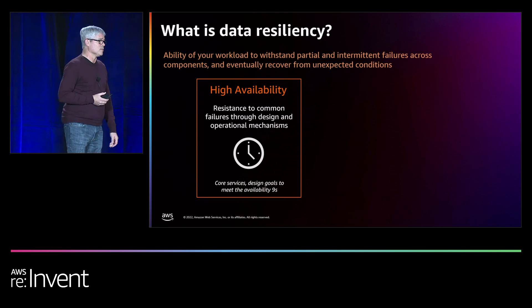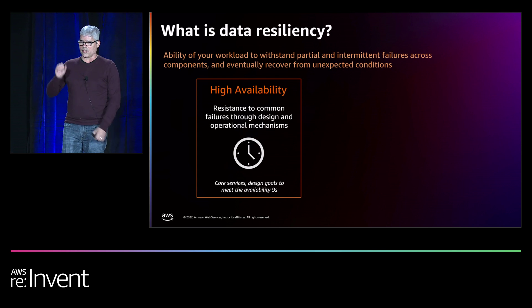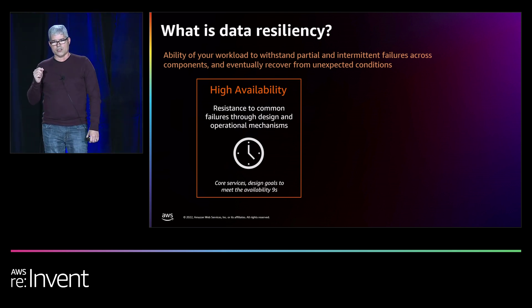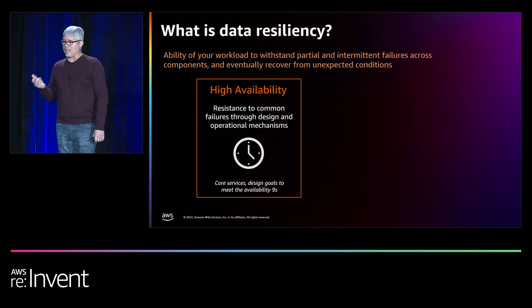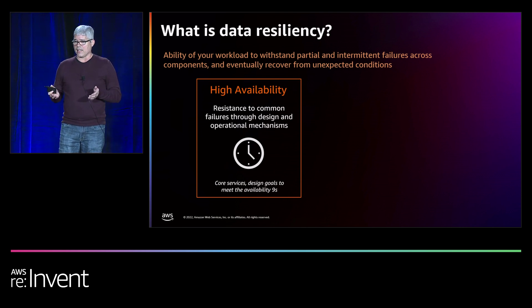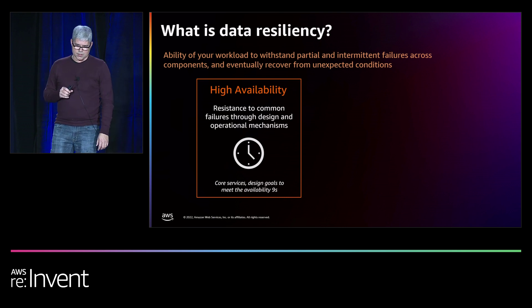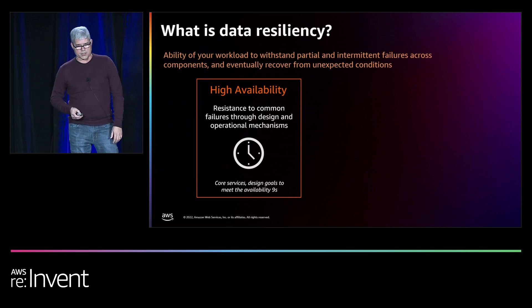Sometimes high availability is about graceful degradation rather than hard failures. Take video conferencing as an example: if your internet is having a bad day and video quality drops, as long as the call stays up at lower resolution, you can still have your meeting. In a severe case, it might drop back to audio — not ideal, but the business decisions can still be made. Once the network issues resolve, video quality dynamically adjusts back. That's graceful degradation instead of hard failures.